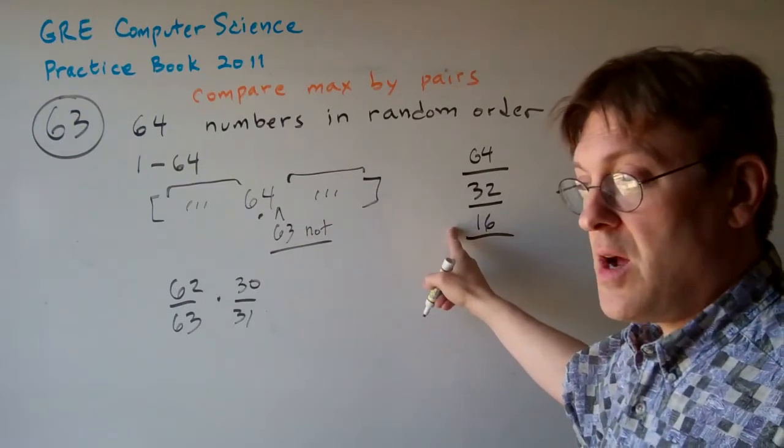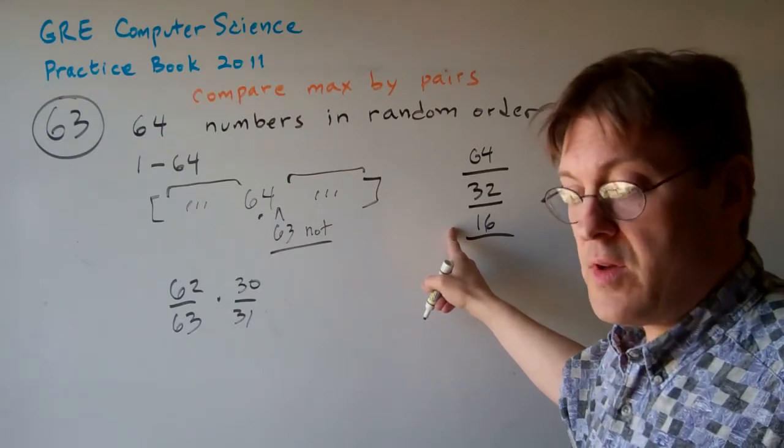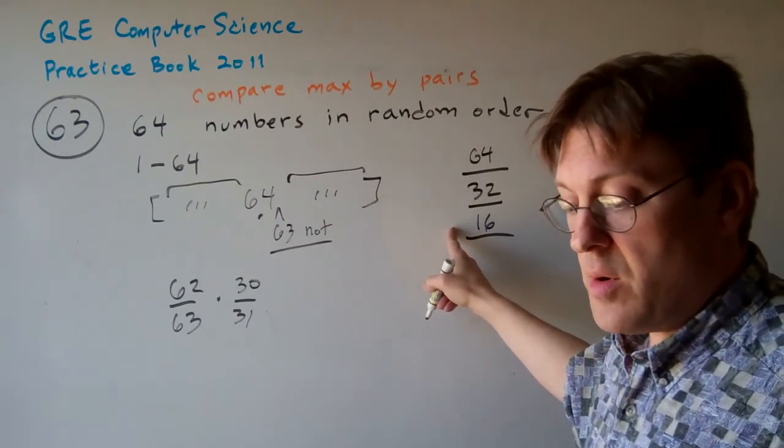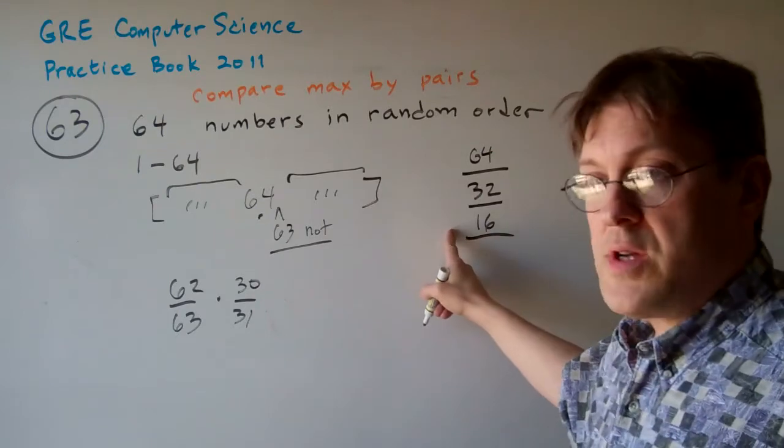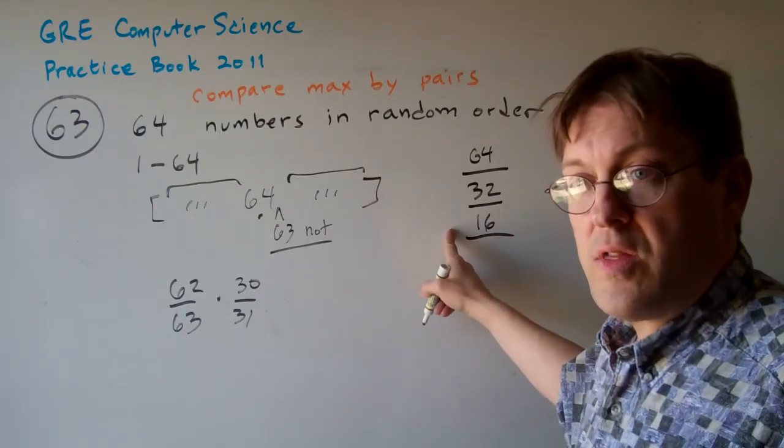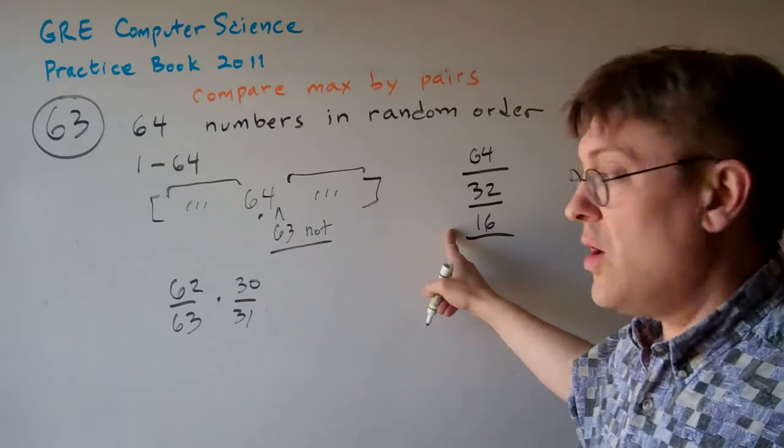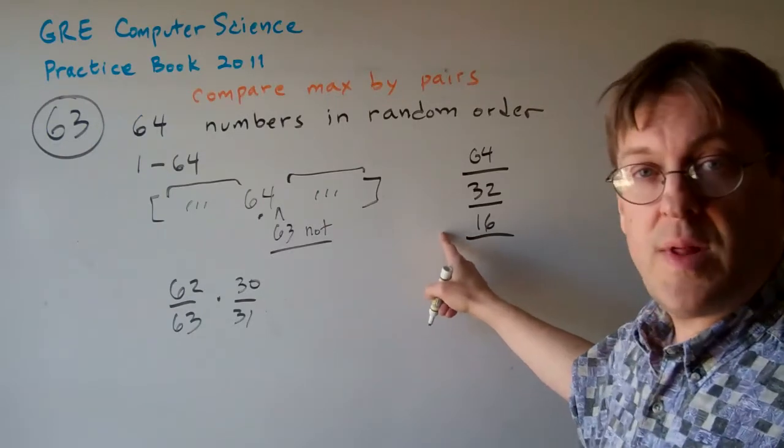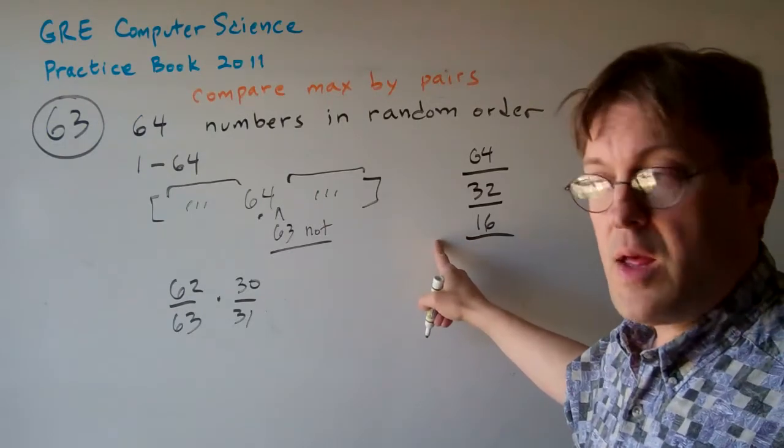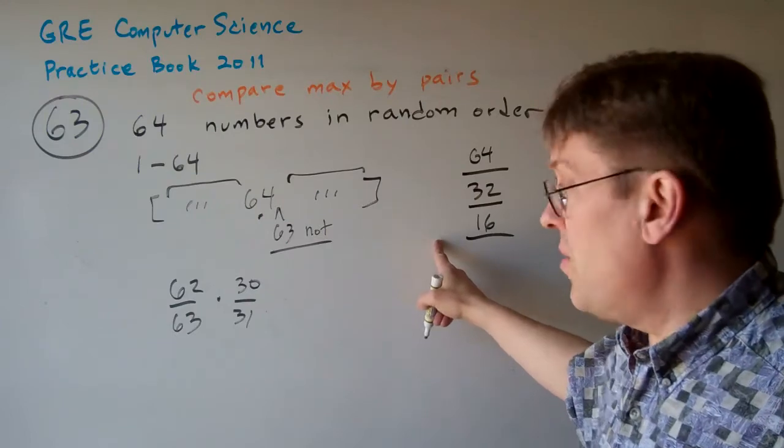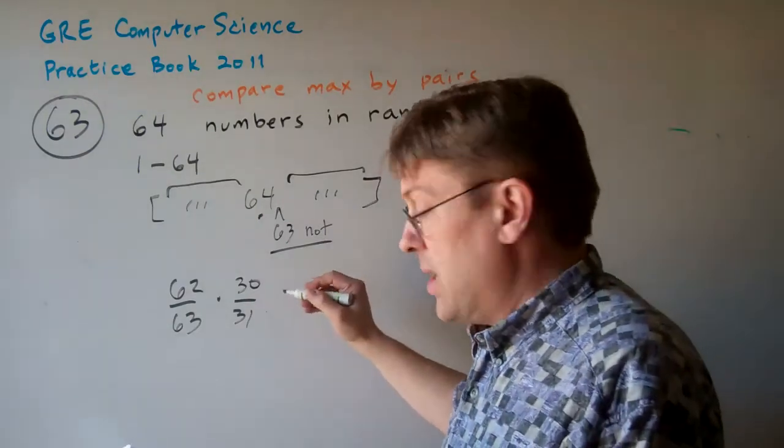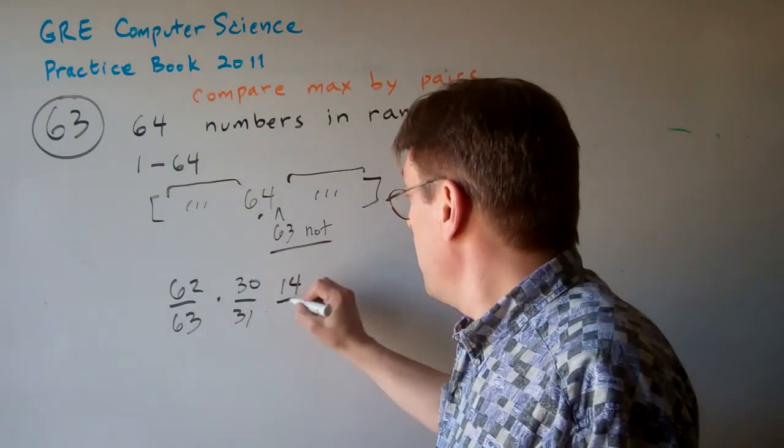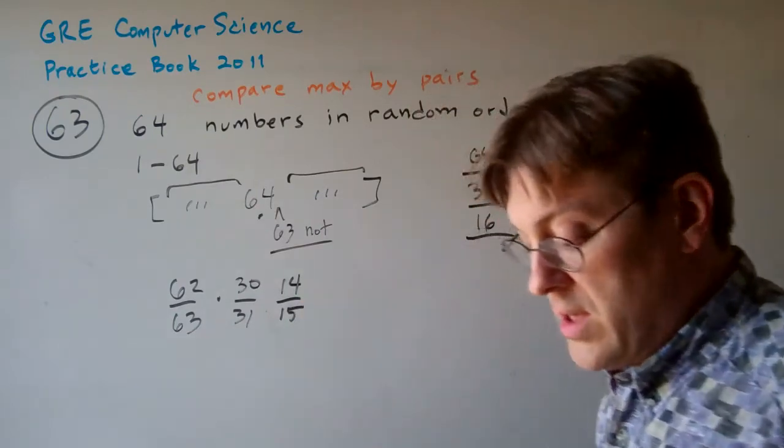How many chances are there? I mean, 64 is obviously going to be in the list because 64 is the highest number. What are the chances where 63 is not next to 64? Well, there's 15 places for 63 to be. 14 of them are not next to 64. So again, it's 14 out of 15.